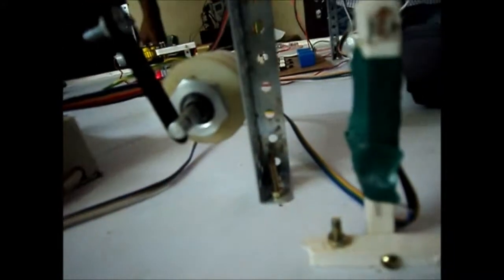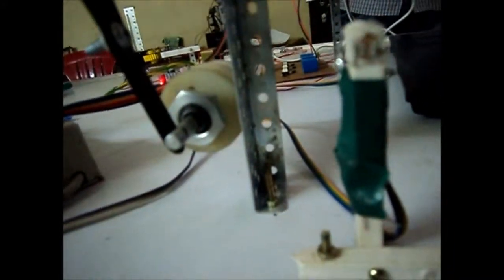Talking about the train, this is our train model. You can see there is an ultrasound sensor at the top, there is a buzzer, and there is a light. If you look very closely, this is the sensor near our railway gate which is an LDR sensor.